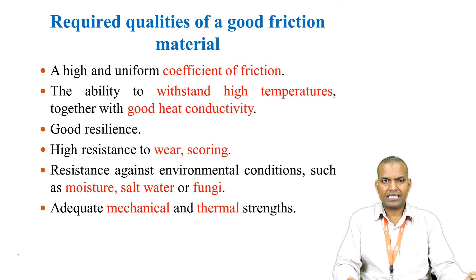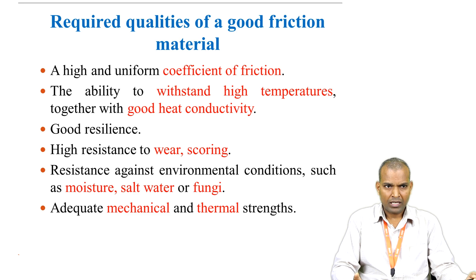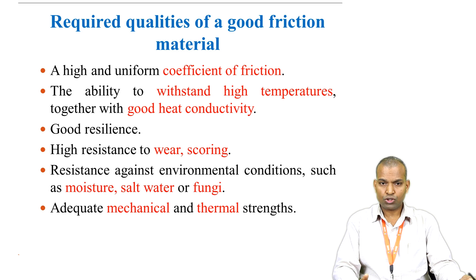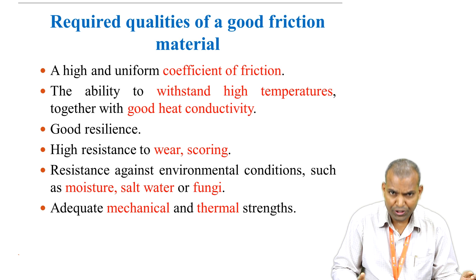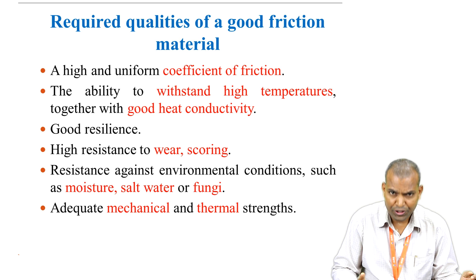The driving member is kept rotating; when the driven member is brought into contact with the driving member, it also starts rotating. The required qualities of a good friction material are: number one, a high and uniform coefficient of friction; number two, the ability to withstand high temperatures together with good heat conductivity; number three, good resilience; number four, high resistance to wear and scoring; number five, resistance against environmental conditions such as moisture, salt water, or fungi; and adequate mechanical and thermal strength.